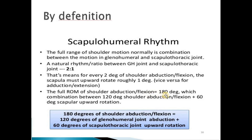The full shoulder range of motion — abduction or flexion — is 180 degrees. This is a combination of 120 degrees of glenohumeral joint abduction or flexion plus 60 degrees of scapulothoracic joint upward rotation. To repeat: 180 degrees of shoulder abduction or flexion equals 120 degrees of glenohumeral joint abduction plus 60 degrees of scapulothoracic joint upward rotation.